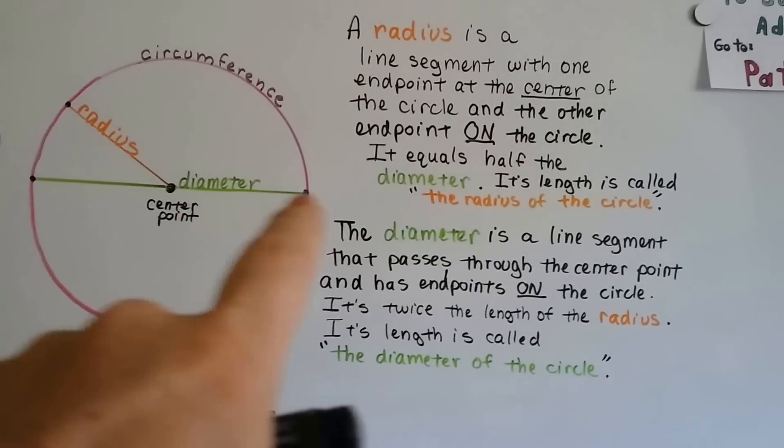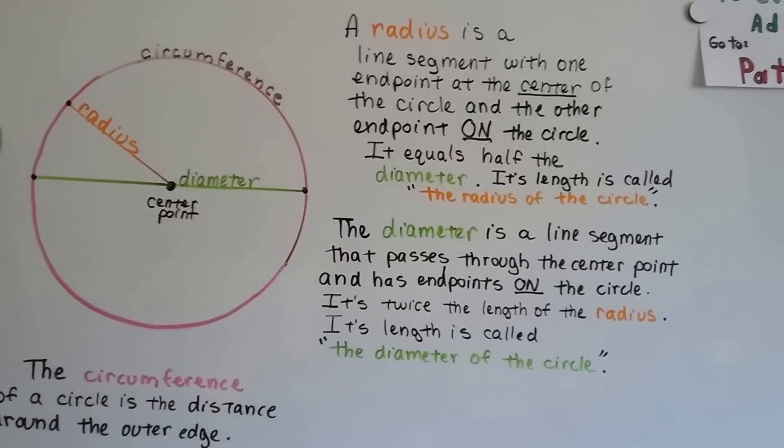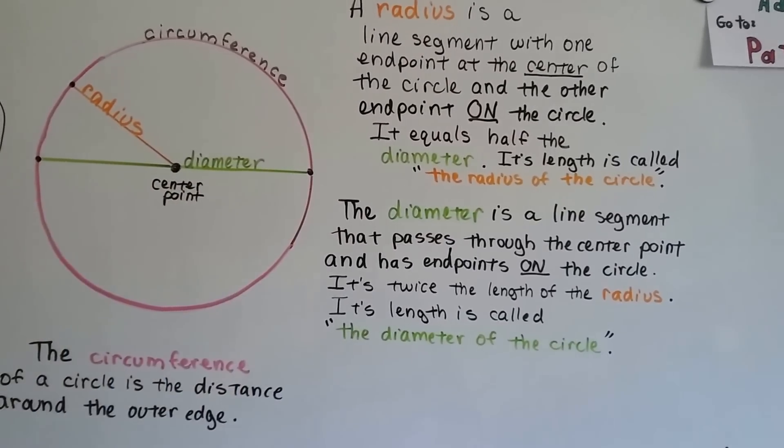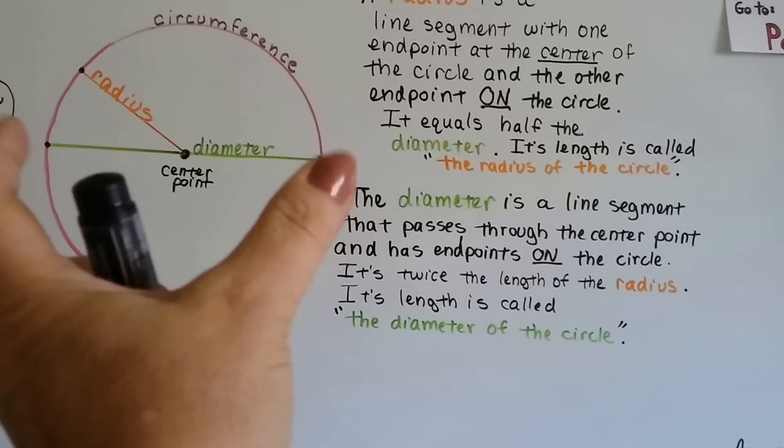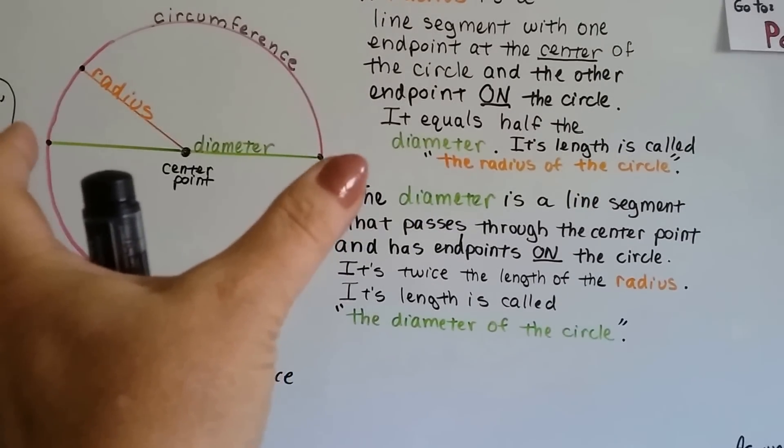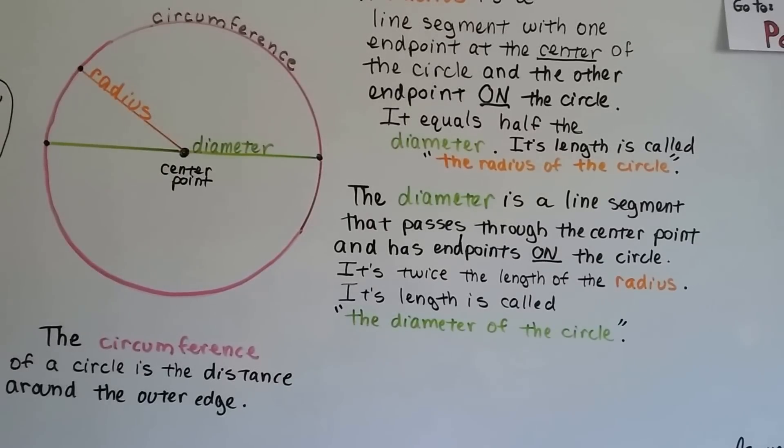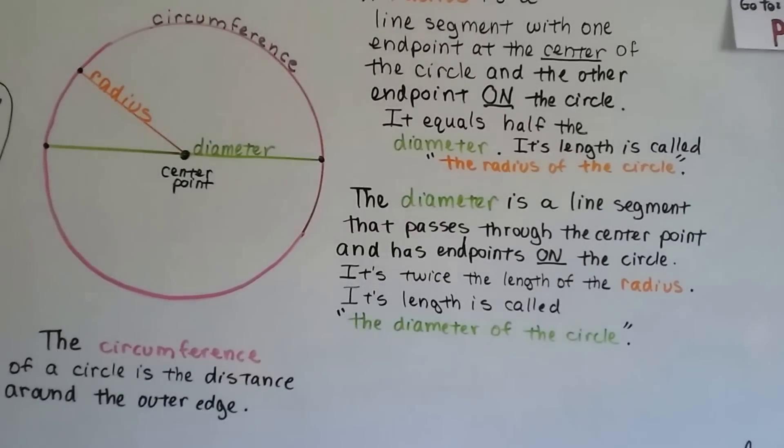Now the diameter, this lime green guy, is a line segment that passes through the center point and has endpoints on the circle, the circumference. It's twice the length of the radius, and its length is called the diameter of the circle.